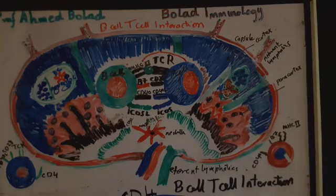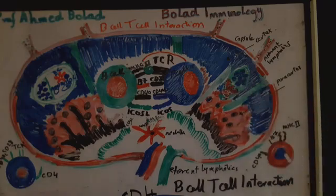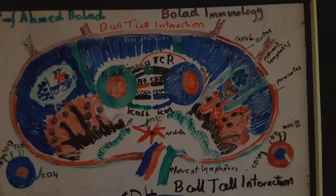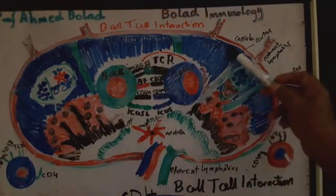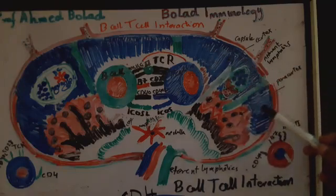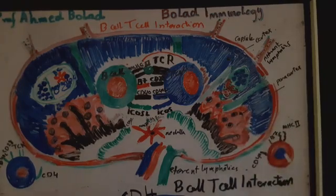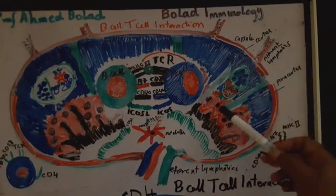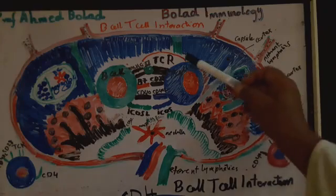B-cells acquire these antigens and present them to CD4 cells. This takes place at the line of demarcation between the cortex, which is the B-cell area, and the paracortical area, where T-cells concentrate. The blue area is the cortex and the red area is the paracortical area.